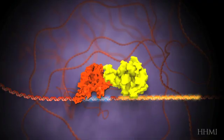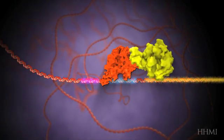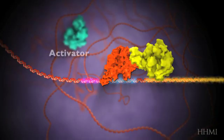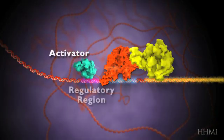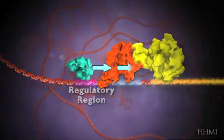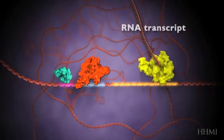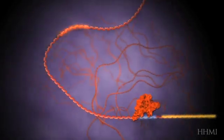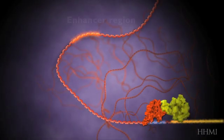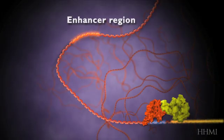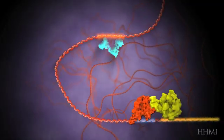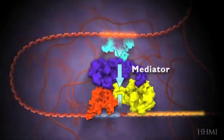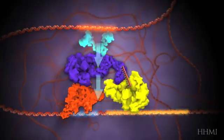RNA polymerase needs to be activated by a type of transcription factor called an activator. Some activators recognize and bind to the regulatory region of the DNA near the promoter region. Other activators bind to a distant region of the chromosome called the enhancer region, and work with mediator molecules to initiate transcription.